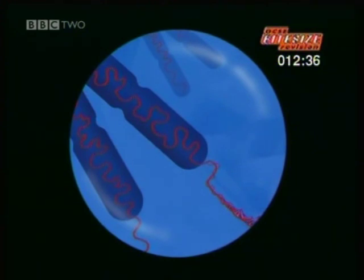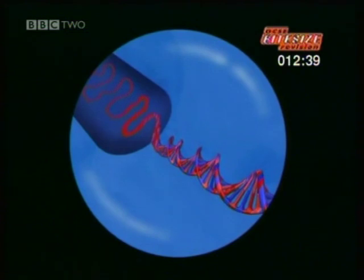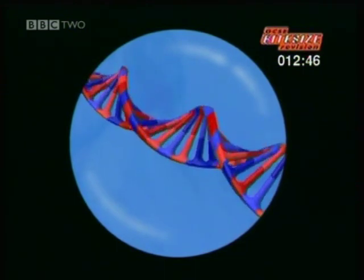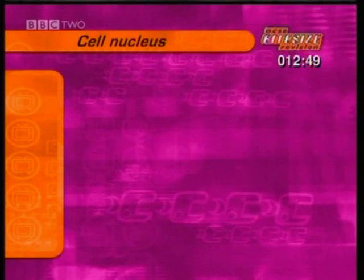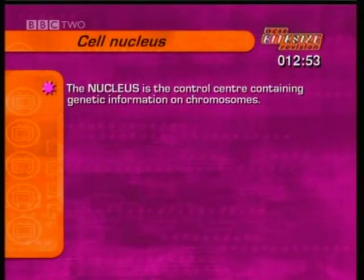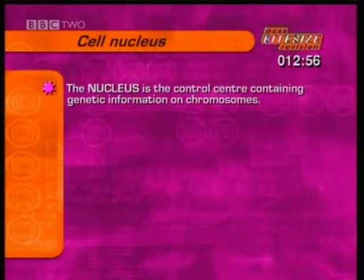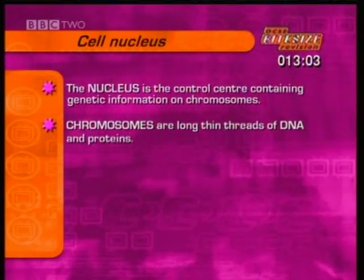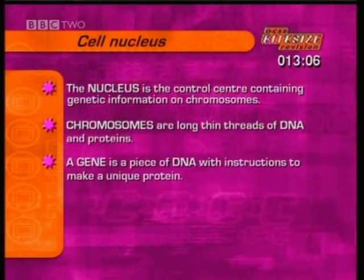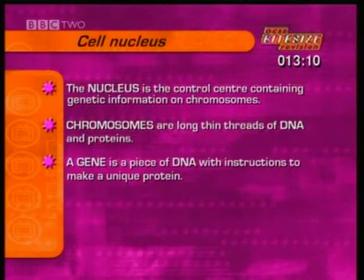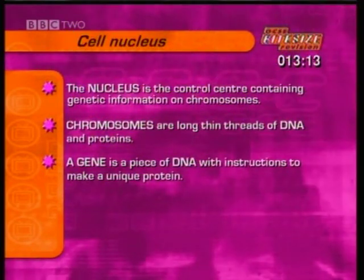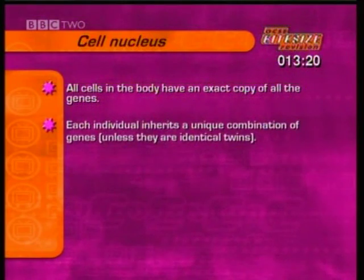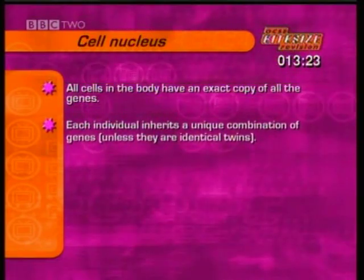Chromosomes are made up of two strands of DNA twisted into a spiral shape, and along these spiral strands are found the genes — our own personal genetic codes. The nucleus is the control centre that contains the genetic information for the cell on chromosomes. Chromosomes are long, thin threads made of DNA and proteins. A gene is a piece of DNA with instructions to make a unique protein. All the cells in the body have an exact copy of all the genes, and each individual inherits a unique combination of genes, unless they're identical twins.